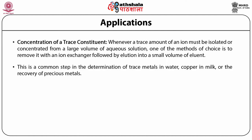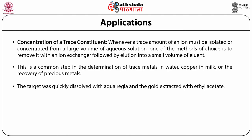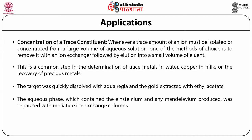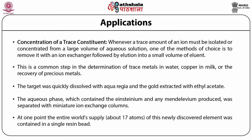Perhaps the most spectacular example occurred in the isolation and identification of the first sample of mendelevium. Ten thousand atoms of einsteinium on a gold foil were bombarded with high-energy alpha particles. The target was quickly dissolved with aqua regia and the gold extracted with ethyl acetate. The aqueous phase which contained the einsteinium and any mendelevium produced was separated with a miniature ion exchange column. At one point the entire world's supply — about 17 atoms of this newly discovered element — was contained in a single resin bead.